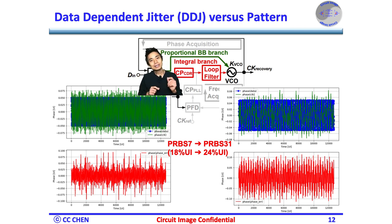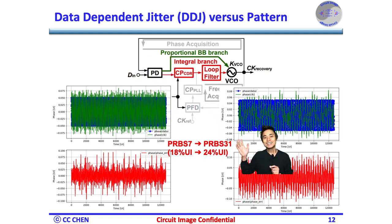The long run pattern would cause the CDR more latency than the short run pattern. Here is the phase error image of a PRBS 31 that would degrade 6% UI more than PRBS 7. Why would that happen? Think about the no correction images during the no transition for 5 seconds.